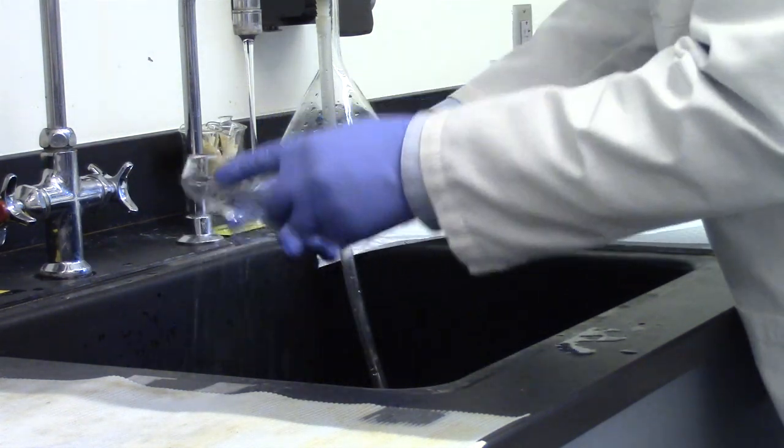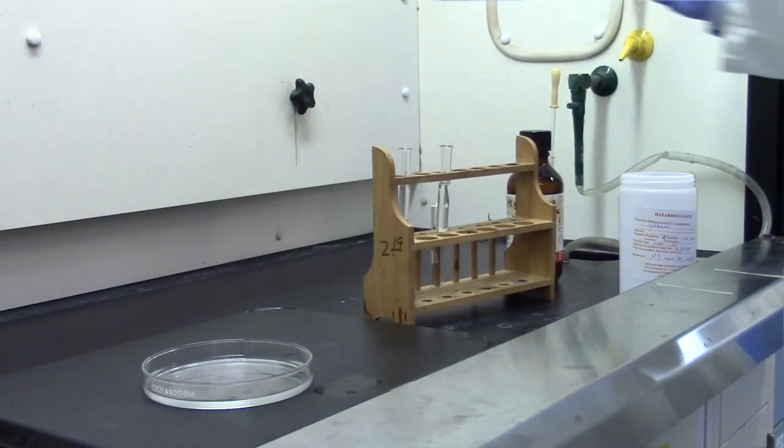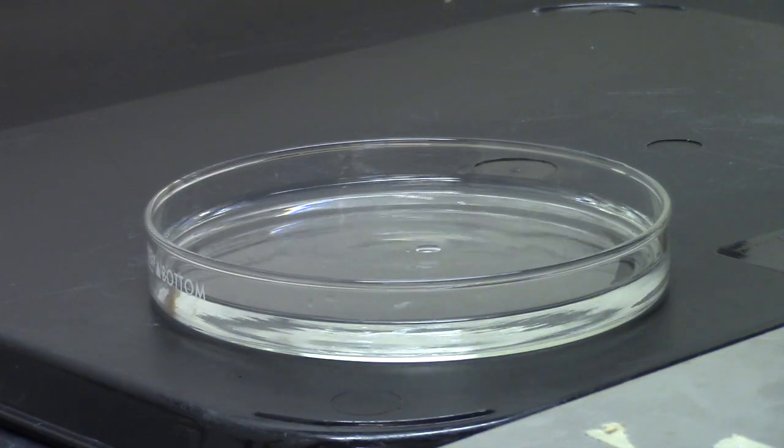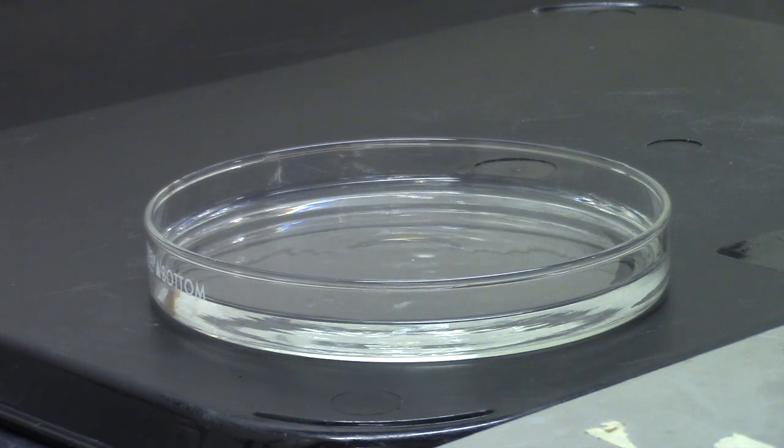Repeat cleaning procedure for the petri dish, rinsing of pipette with stearic acid solution, and count the drops to form the monolayer a second time. If time permits, do a third trial.